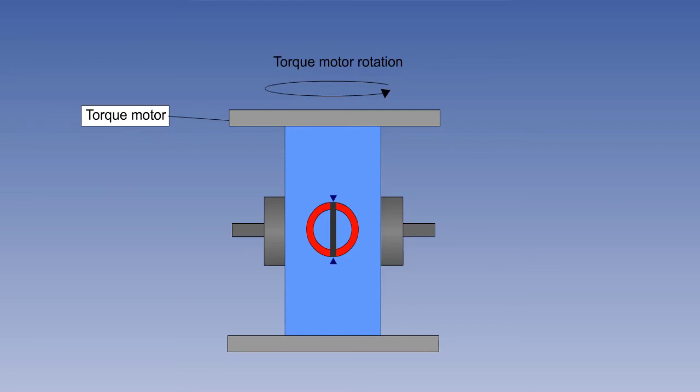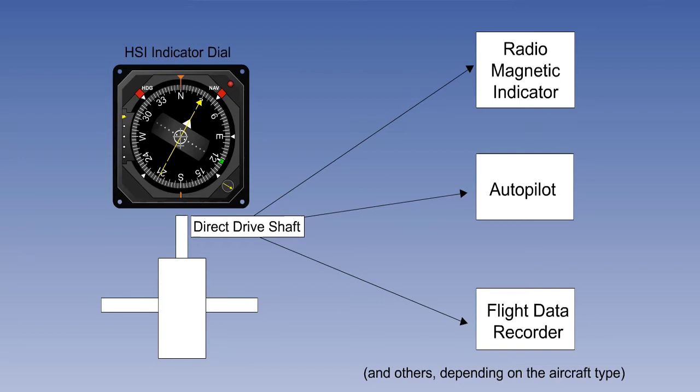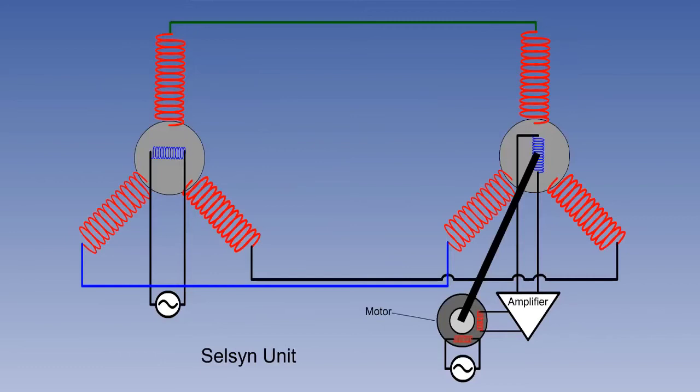One of the advantages of the gyromagnetic compass over the simple direct reading compass is the facility to electrically transmit heading information to users and input into other instruments, such as the RMI, autopilot, and flight data recorder. The information is picked off from the driveshaft between the gyro and the compass card. The transmitting and receiving device is called a CELSYN unit. The word CELSYN is short for self-synchronization.